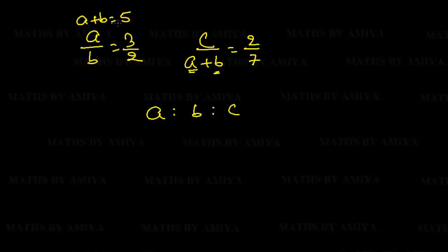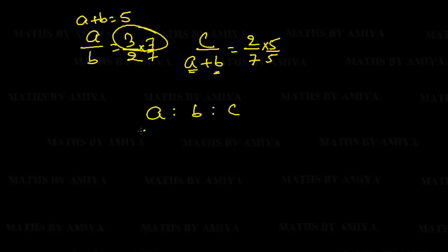From the first ratio, A+B = 5; from the second ratio, A+B is in the denominator with value 7. We cross multiply the values of the common relation: 7 from the second and 5 from the first, giving us multipliers of 7 and 5.